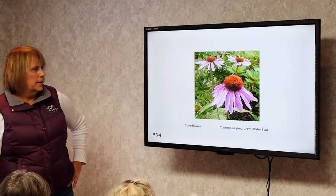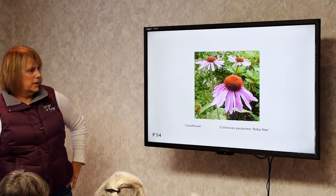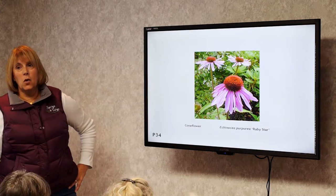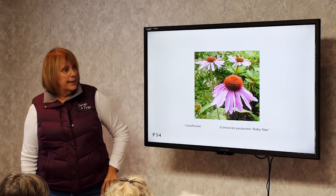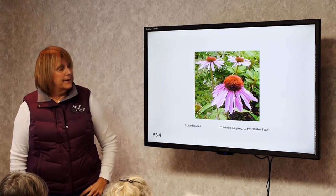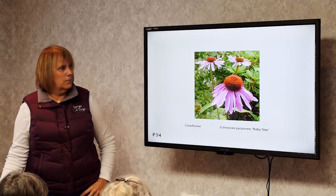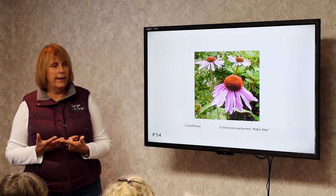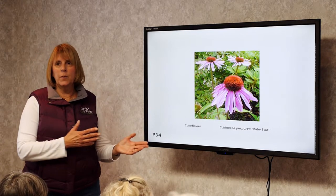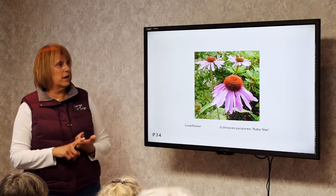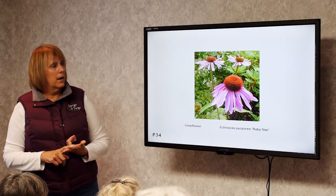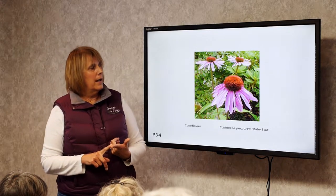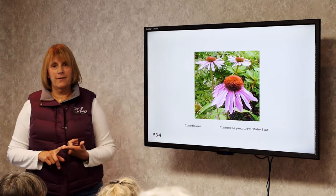Coneflower. Ruby Star in particular gets about three to four feet tall — one of the taller ones. What's nice about all coneflowers is they start blooming in June and keep blooming all the way until frost. It's a great cut flower, a great bee flower, a great bird flower, and a great butterfly flower.